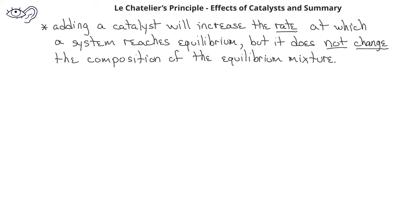What will be the effect of adding a catalyst to a system at equilibrium? In short, adding a catalyst will have no effect on the composition of the equilibrium mixture. The catalyst will increase the rate at which the system reaches equilibrium, but the equilibrium itself is not disturbed by the presence of a catalyst.